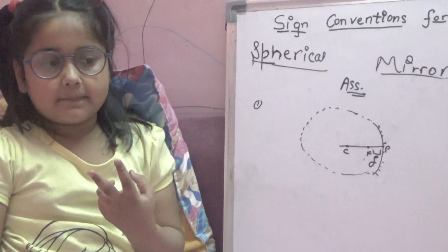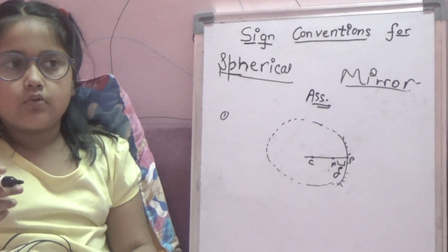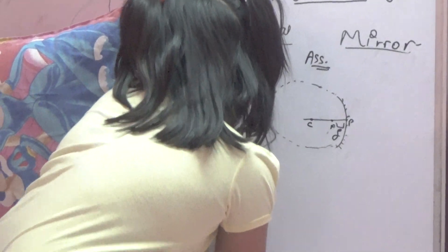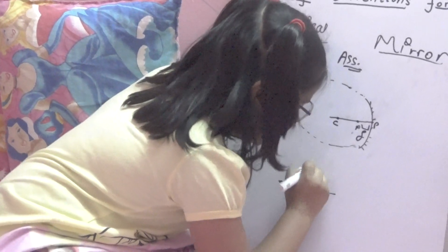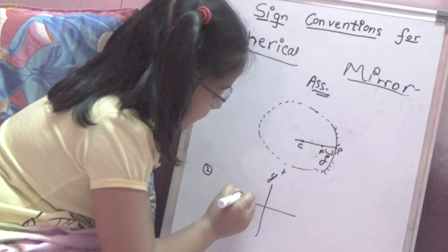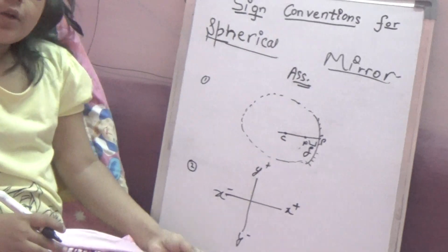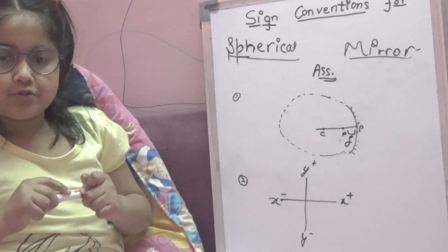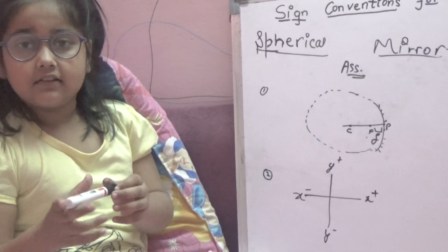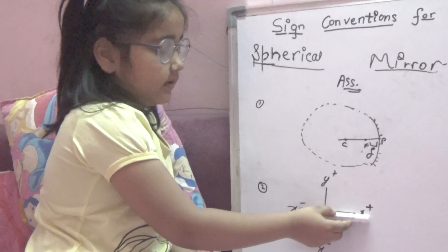Our second assumption: you must have studied coordinate geometry, where the coordinate system has positive and negative X and Y axes. According to this assumption, the principal axis lies along the X-axis.